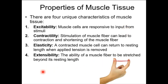Each muscle has a name, an origin, and an insertion — which are attachment sites to bone — and they all have innervations. You're not even responsible for any innervations. I've known massage therapists who were responsible for name, origin, insertion, action, and innervation for 500-plus muscles. So this list I gave you is a short one.